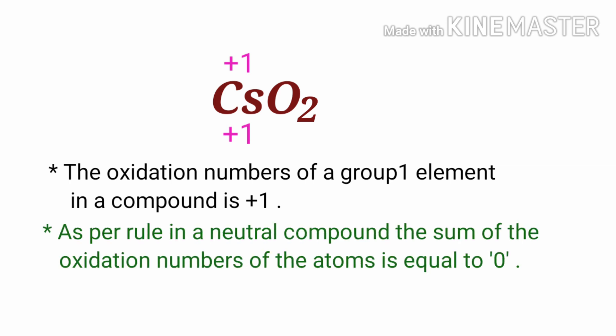As per rule, in a neutral compound, the sum of the oxidation numbers of the atoms is equal to zero. So the numbers along the bottom must add up to zero.